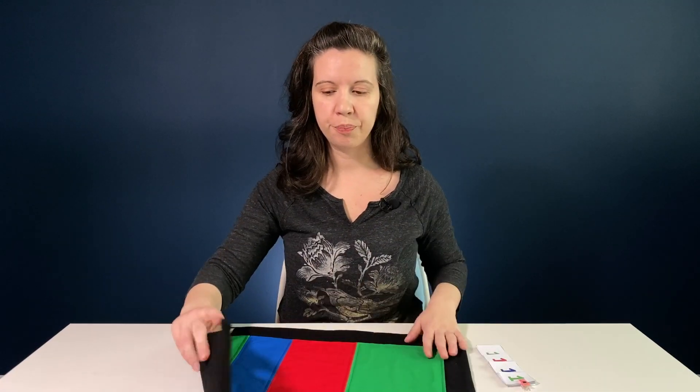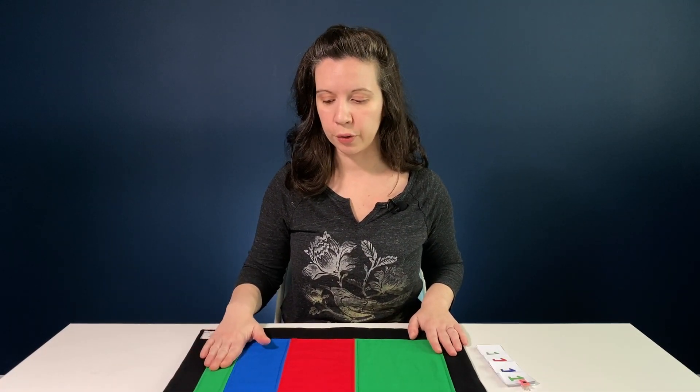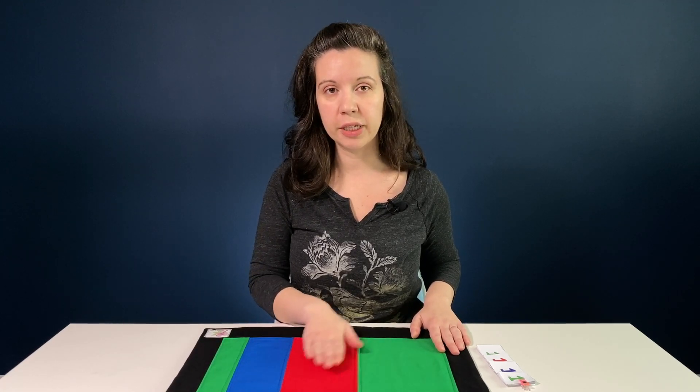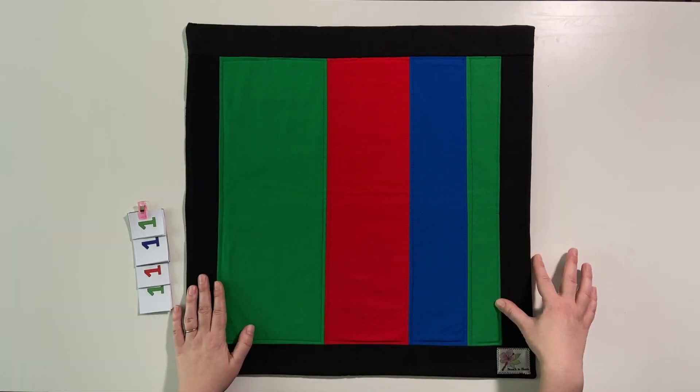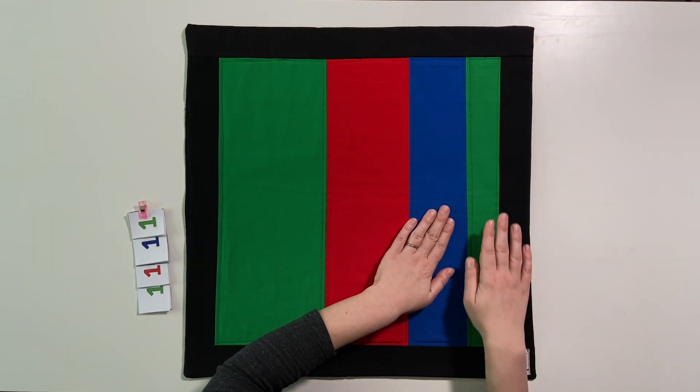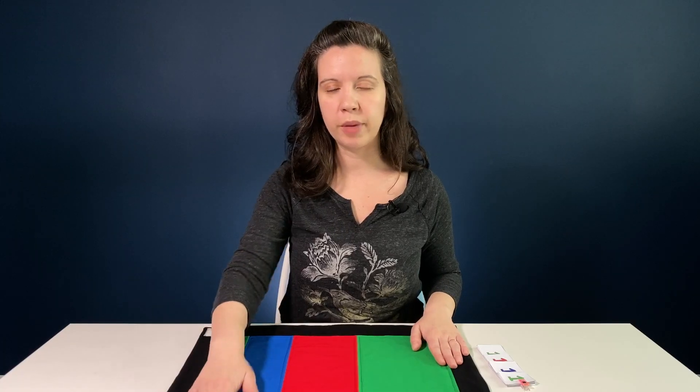Last time we talked about Montessori place value and base 10, we were introducing the golden bead material. Today we're introducing the number cards that go with them. The materials you'll need are the number cards one to nine thousand, and this place value mat which has a space on the right for units, then tens, hundreds, and thousands. We do it in this orientation because it's the way you would write a number: one thousand one hundred and eleven.